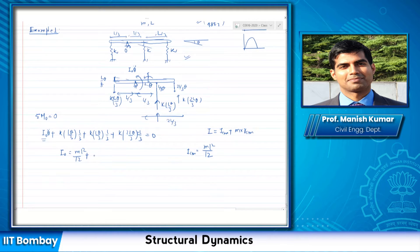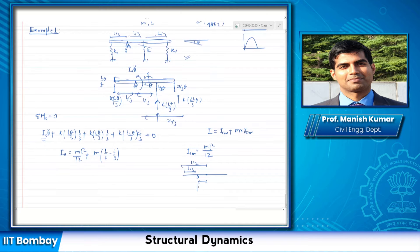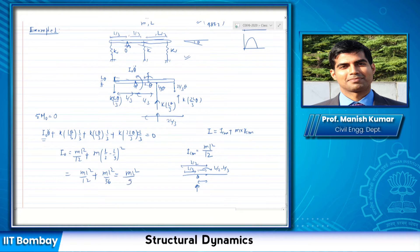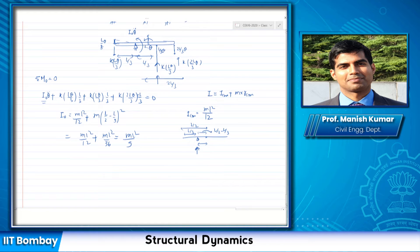The center of mass is at distance l/2 from one end, and the point of rotation is at l/3, so the distance is l/2 − l/3. Squaring that and applying the theorem: ml²/12 + ml²/36 = ml²/9. This result can now be substituted into the equation.